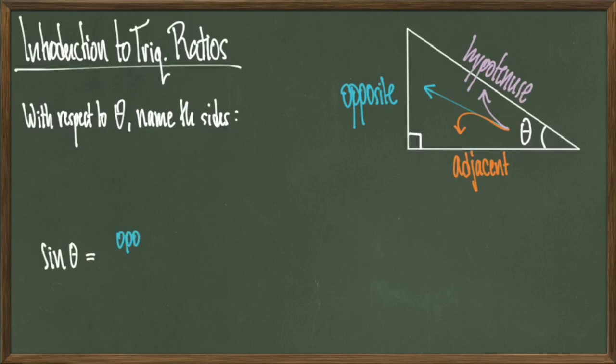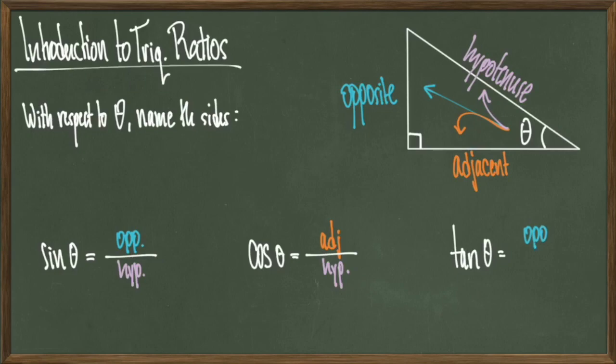To begin with our definitions, the sine of theta is defined as the opposite over the hypotenuse. Cosine of theta is defined as adjacent over hypotenuse, and tangent of theta is defined as opposite over adjacent. And these are the three fundamental ratios of trigonometry.